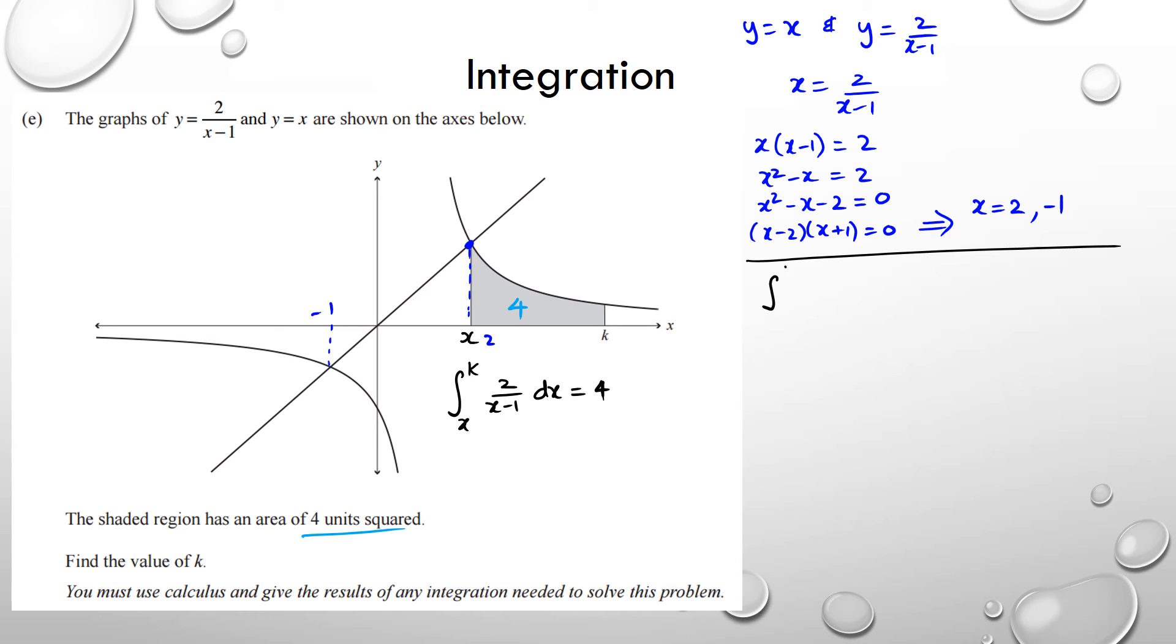So it's going to look like this. I've got from k to 2, integral of 2 over x minus 1 dx, and all that equals to 4. So integrating 2 over x minus 1, I know that it's going to be 2 times ln of x minus 1. And don't really need to do much more to that. That's basically it. And my two limits are between k and 2, and that equals to 4.